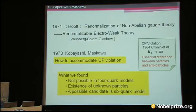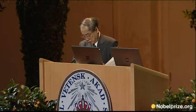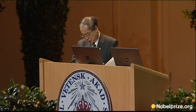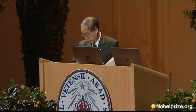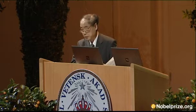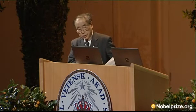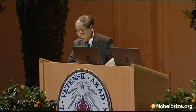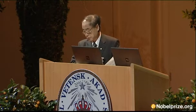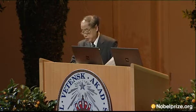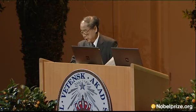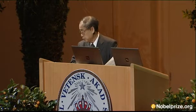We investigated how to accommodate CP violation in the gauge theory, and what we found was summarized here. At that time, only three quarks were widely accepted. But the three-quark model has some flaw in gauge theory. Therefore, from the theoretical point of view, the four-quark model was thought to be a preferable one. However, we argued that it is impossible to accommodate CP violation in the four-quark model. This implies there must be some unknown particle besides the four quarks — I thought this is quite a strong and important conclusion of our argument. Then we considered a few possible mechanisms of CP violation by introducing new particles, and we proposed the six-quark model as one of such possible mechanisms.